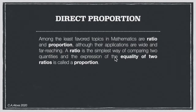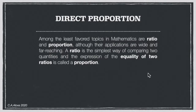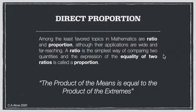A ratio is the simplest way to compare two quantities, and an expression of the equality of two ratios is called a proportion. We have that common phrase: the product of the means is equal to the product of the extremes.